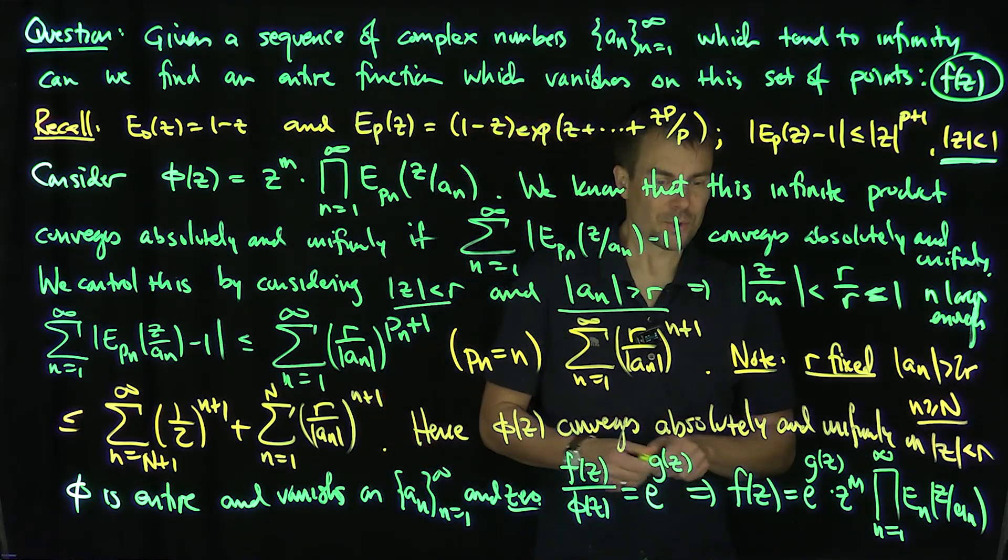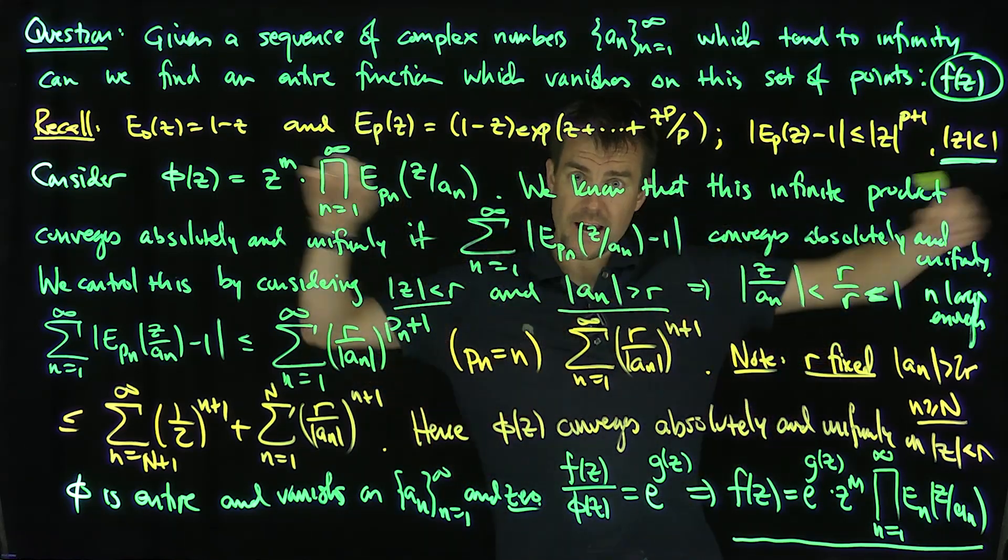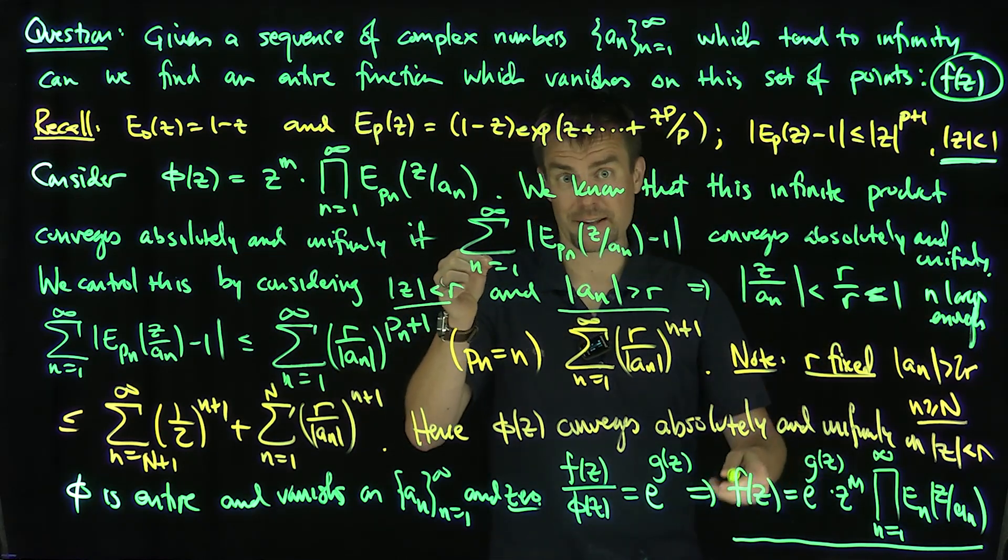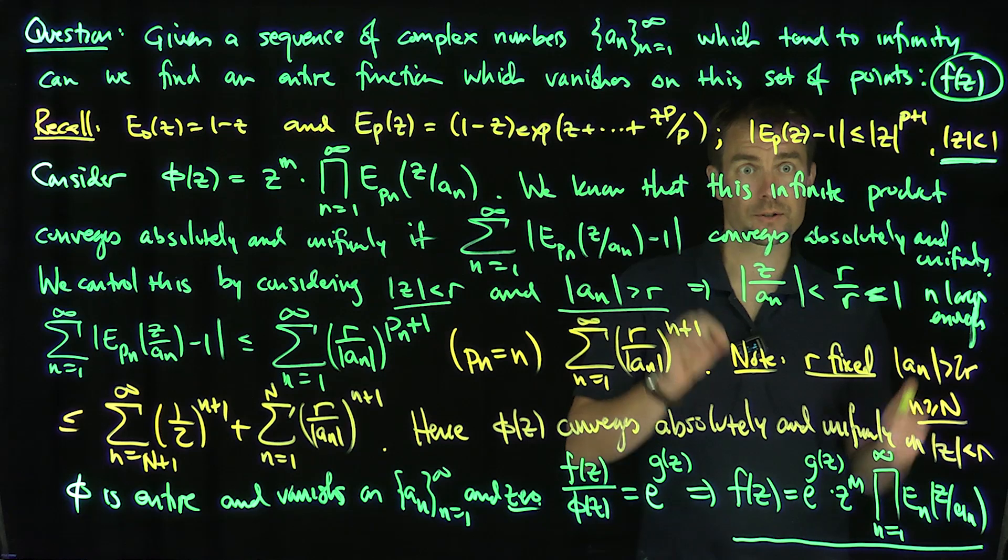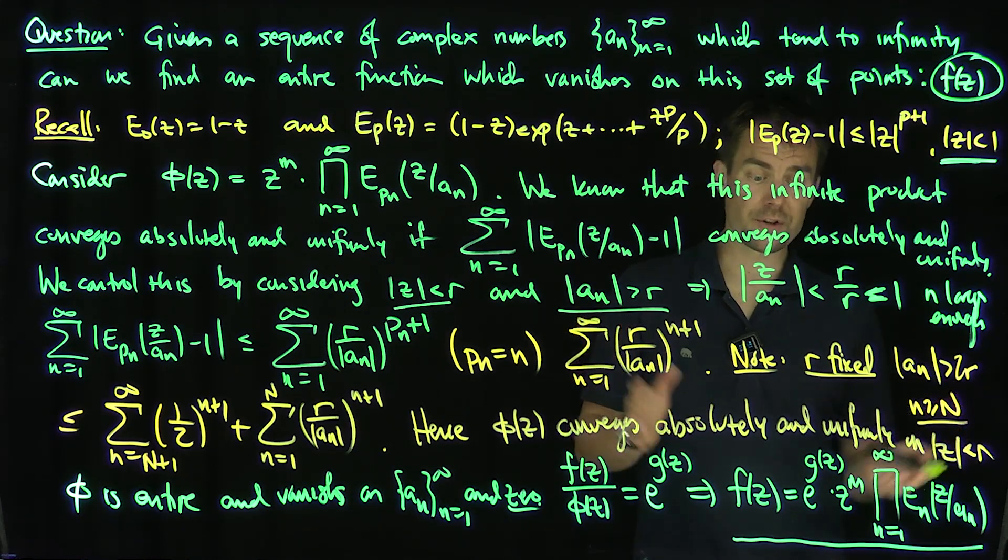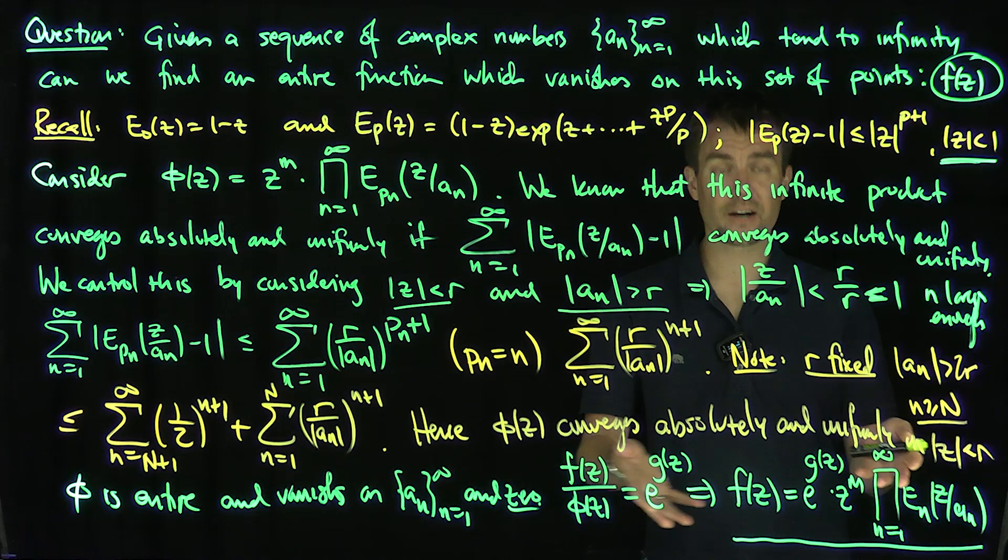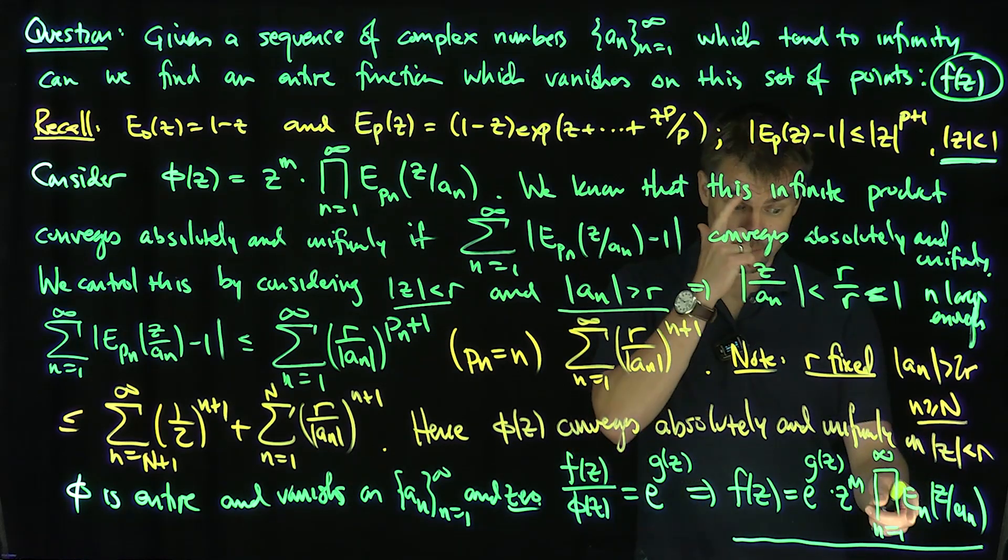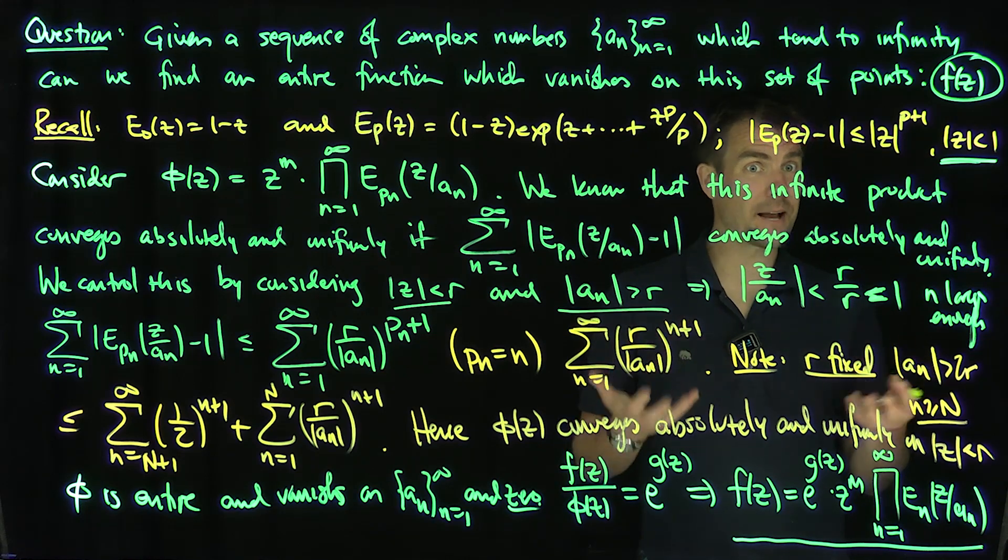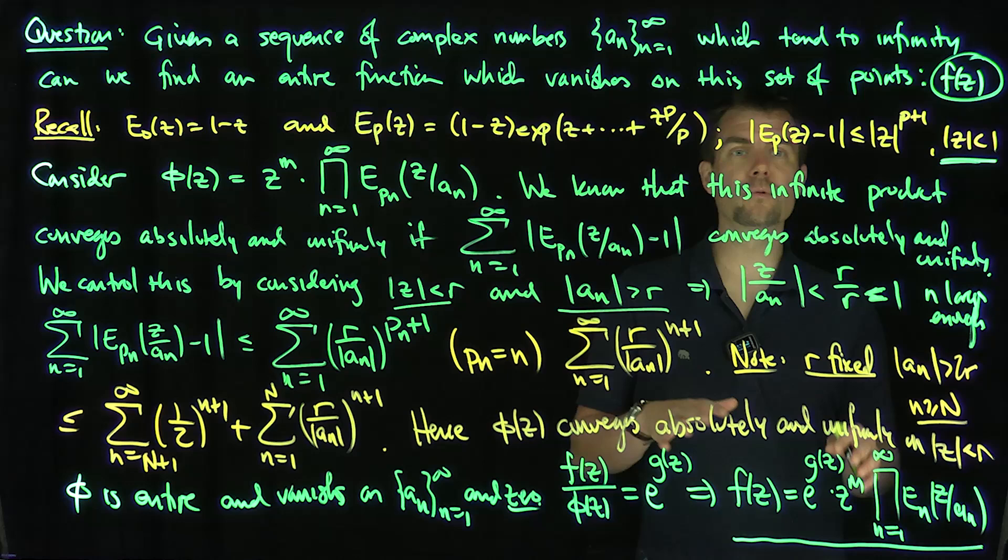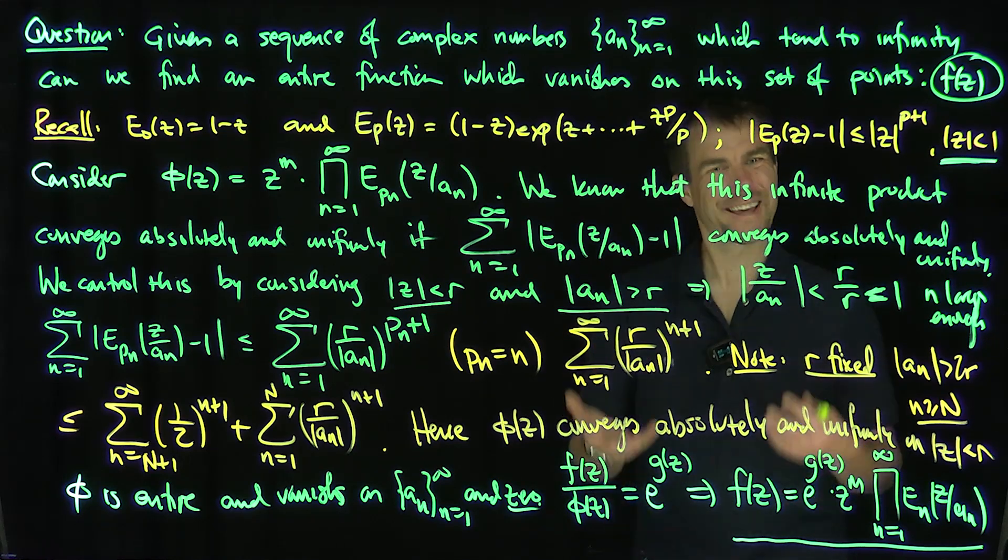So now this is the Weierstrass factorization theorem. It says any function that has zeros at the sequence a_n, which goes to infinity, and is a root at zero, that just gives you the z to the m, can be written as the exponential of an entire function times z to the m times one of these canonical products, these Weierstrass products. In further videos, we're going to take functions that we know vanish at an infinite number of points, like sine and cosine, sinh and cosh, and we're going to apply the Weierstrass factorization theorem to them. We can actually get away with putting in smaller numbers for these elementary factors. And that's the basis of Hadamard's theorem. Hadamard's theorem is much more complicated to prove. We won't prove it, we'll just use this same type of argument on a case-by-case basis, and that will convince us how we can use Hadamard's theorem in further videos. Thank you very much.